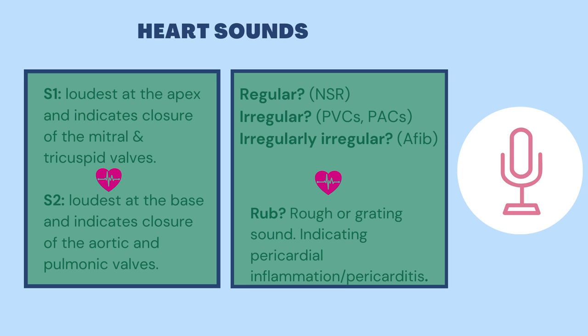As a reminder, let's go over what the S1 and S2 heart sounds indicate. S1 is the closure of the mitral and tricuspid valves, and it's loudest at the apex. S2 indicates the closure of the aortic and pulmonic valves, and is loudest at the base.